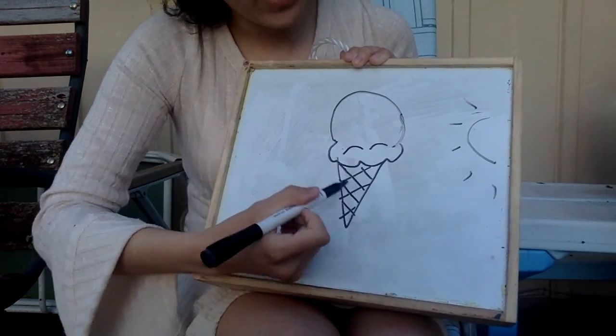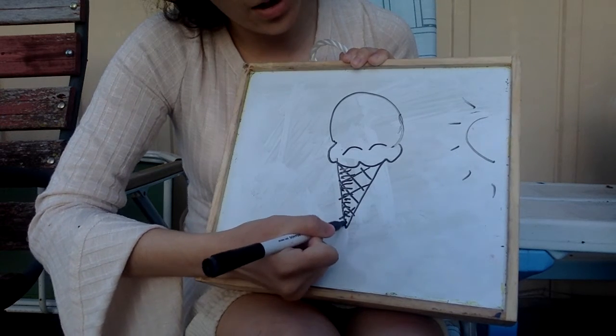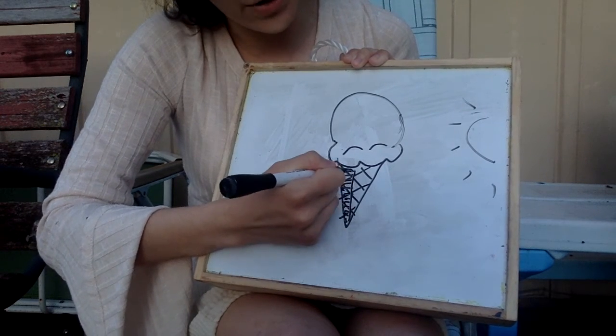If it's light over here, that means the dark is going to be on this side. I'm going to color in this side of my ice cream cone.